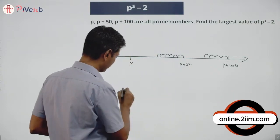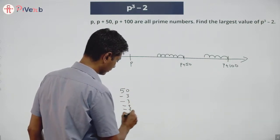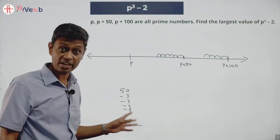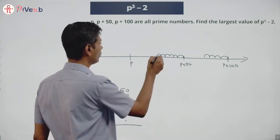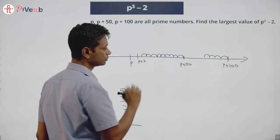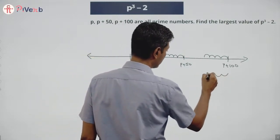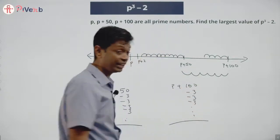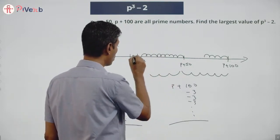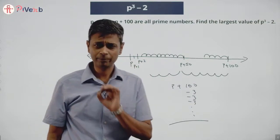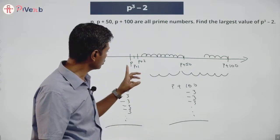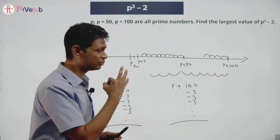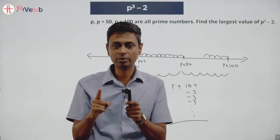So we have p plus 50 mapping back to p plus 2, and p plus 100 mapping back to p plus 1. That gives us three consecutive numbers: p, p plus 1, p plus 2. In any three consecutive numbers, one of them has to be a multiple of 3.